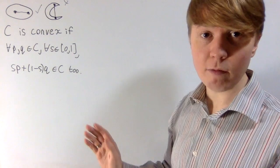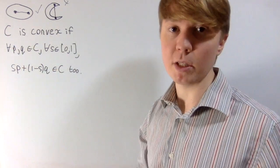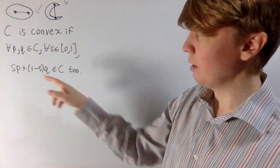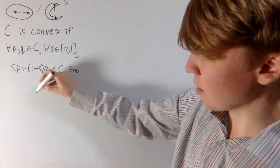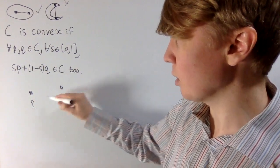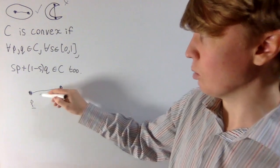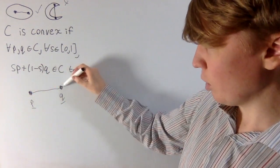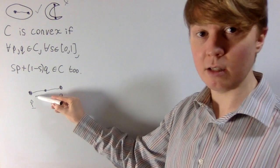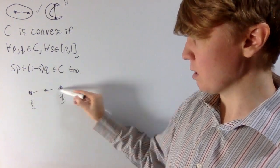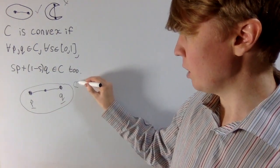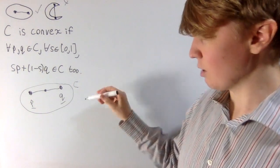This is your intuitive picture, but we can generalise it: C can be any subset of a real vector space. This is a fancy way of saying that for any two points in your set, the line segment between those two points is also contained within the set itself. If you imagine position vectors P and Q, when S is 0 you're at point Q, when S is a half you're at the midpoint, and when S is 1 you reach P. If this line segment is contained within your set C, then C is convex.